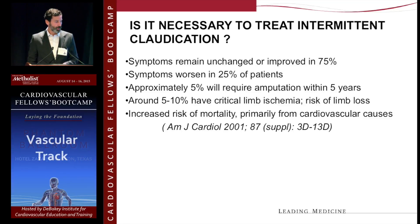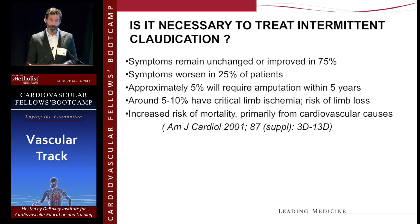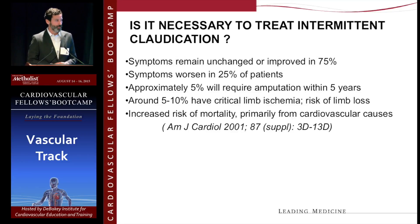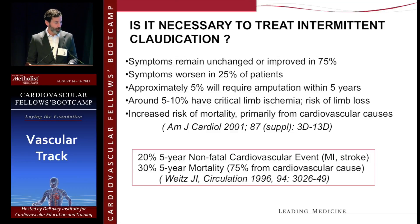An important question is whether it's necessary to treat intermittent claudication. Symptoms remain unchanged or improved in 50% to 75% of patients; symptoms worsen in about 25%. A very low percentage will require an amputation. Some will progress to critical limb ischemia, and you can intervene upon them then. The simple answer is no — you can manage these patients conservatively by modifying risk factors, assessing them periodically, and pursuing exercise programs and smoking cessation. That said, these patients have an increased risk of mortality from cardiovascular diseases: about 20% will suffer an MI or stroke, and there's about a 30% five-year mortality.